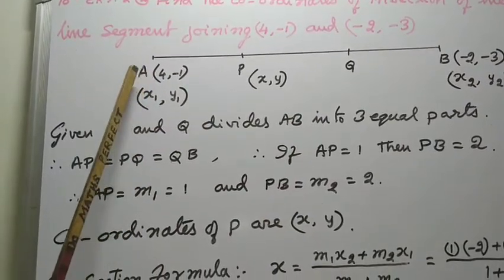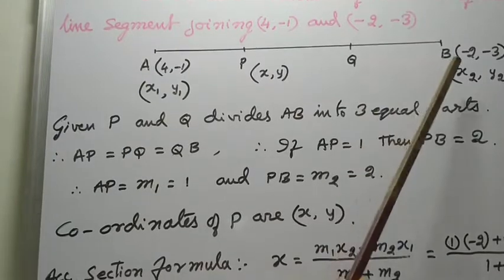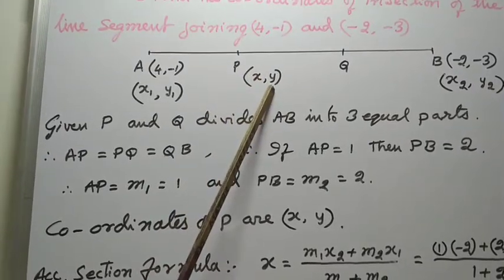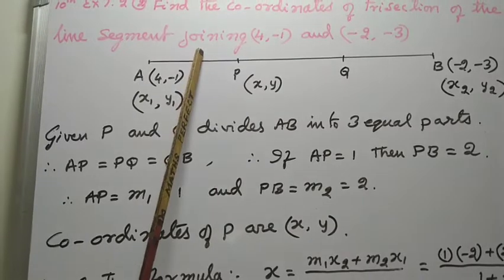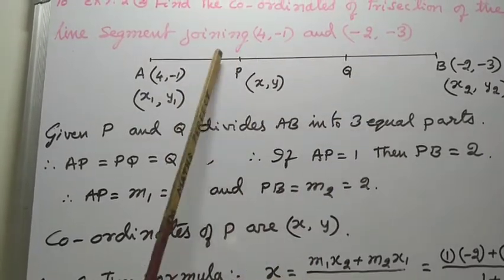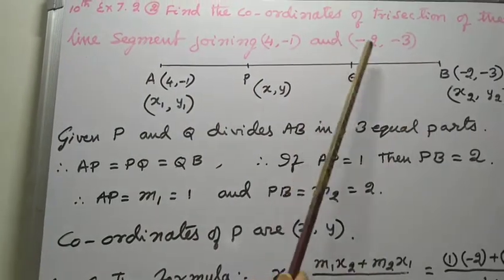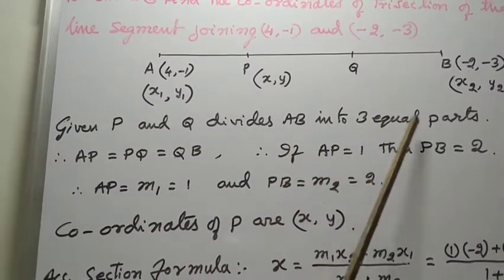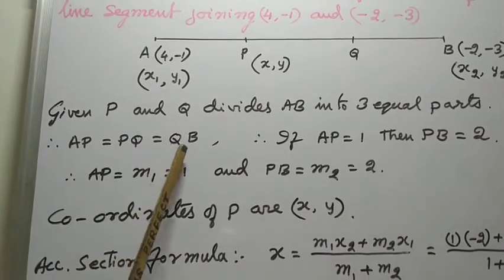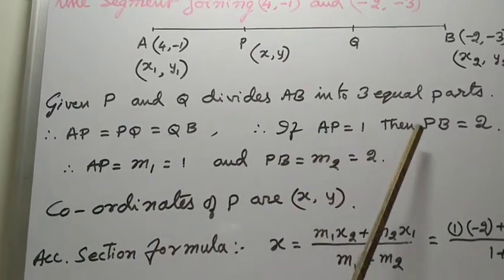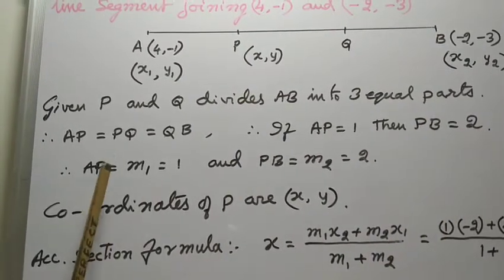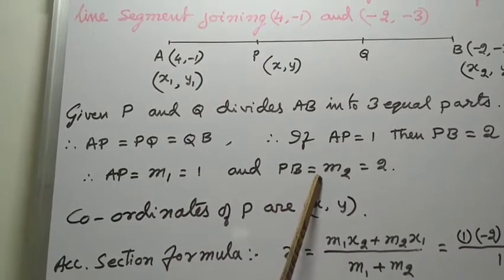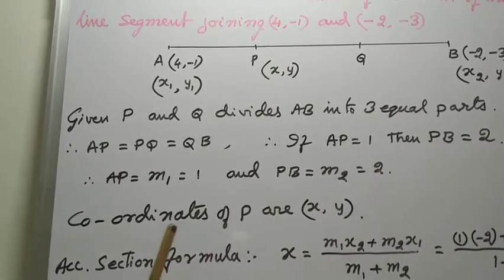Let coordinates of A be (X1, Y1) and B be (X2, Y2). If all three parts are equal, this is one part, one part, and one part. If we take AP as one part then PB equals two parts. Therefore, AP equals M1 equal to 1, and PB equals M2 equal to 2. So coordinates of P are (X, Y).